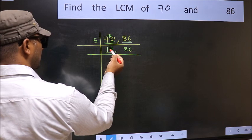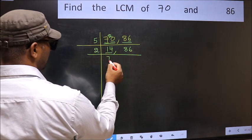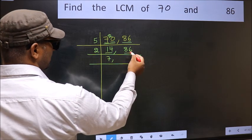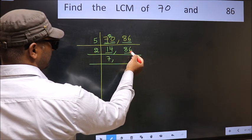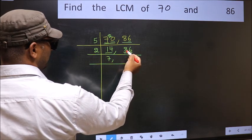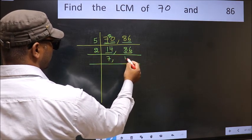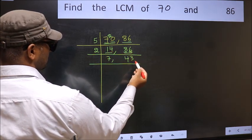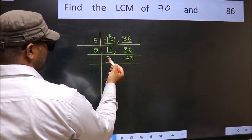Now here we have 14. 14 is 2 sevens 14. The other number is 86. Last digit is 6, even, so this is divisible by 2. First number 8. When do we get 8 in the 2 table? 2 fours 8. The other number 6. When do we get 6 in the 2 table? 2 threes 6. Now here we have 7.